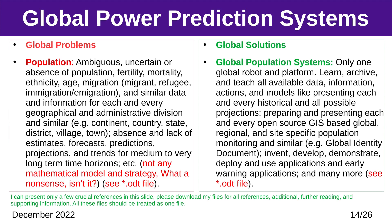Global Problem — Population: ambiguous, uncertain, or absent population, fertility, mortality, ethnicity, age, migration, and similar data for each and every geographical and administrative division; absence and lack of estimates, forecasts, predictions, projections, and trends for medium to very long-term time horizons, etc. Global Solution — Global Population Systems: learn, archive, and teach all available data, information, actions, and models; prepare open-source GIS-based global, regional, and site-specific population monitoring; invent, develop, demonstrate, deploy, and use applications and early warning applications, and many more.